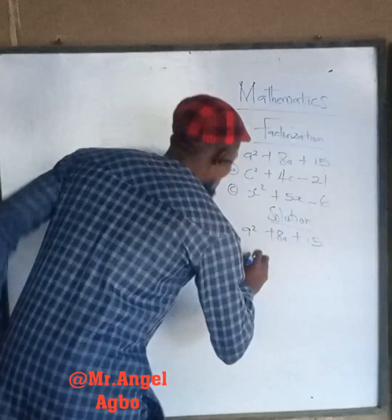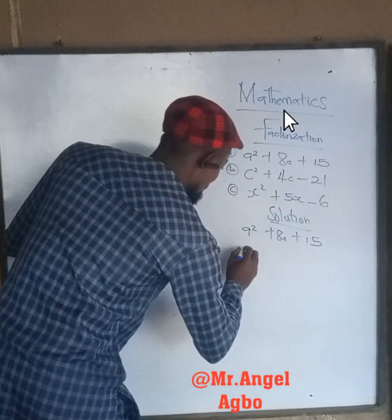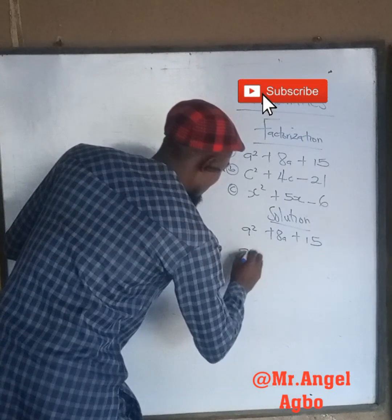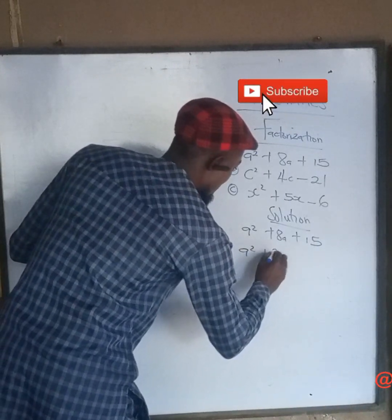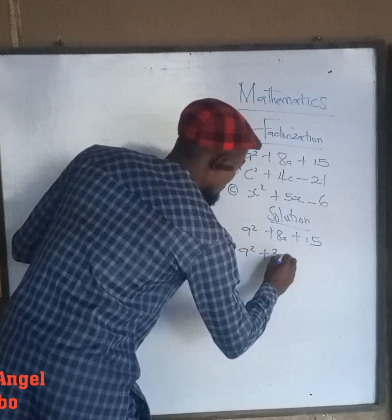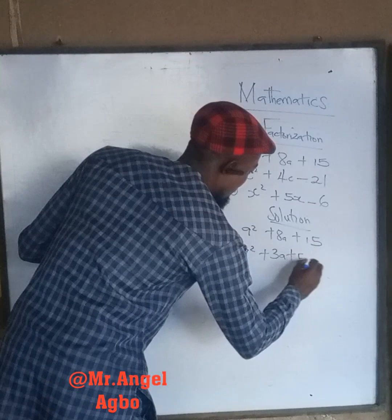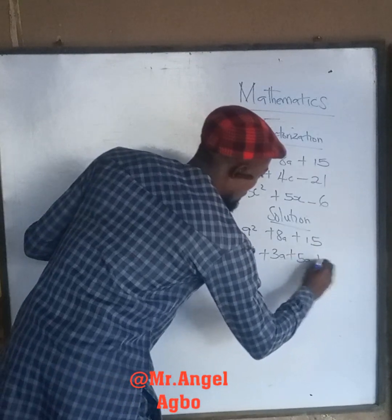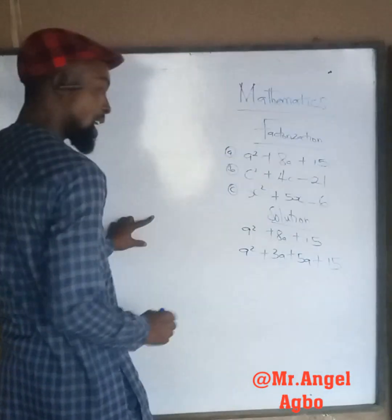So what do we do? We now say that A squared plus 3A plus 5A plus 15.